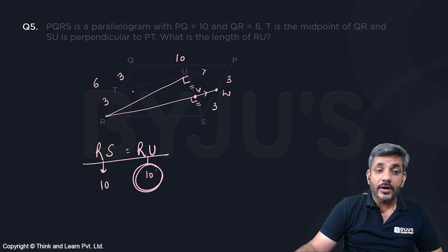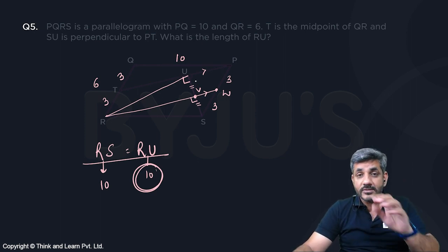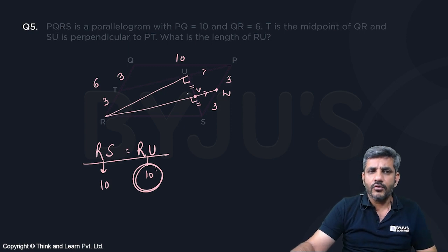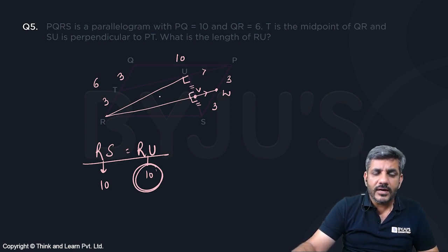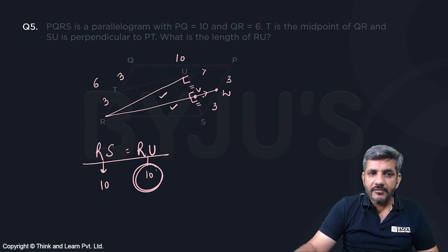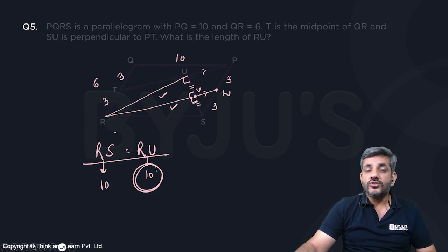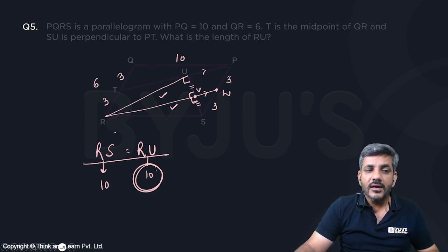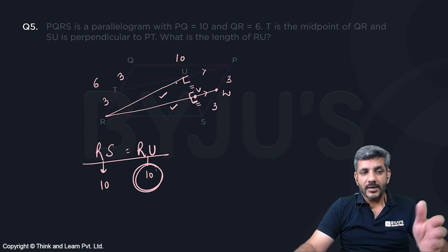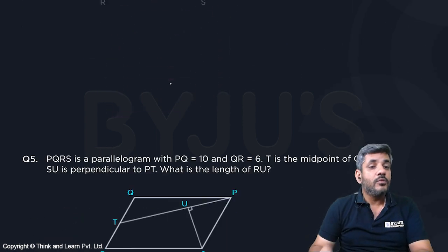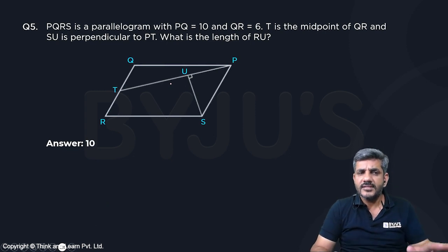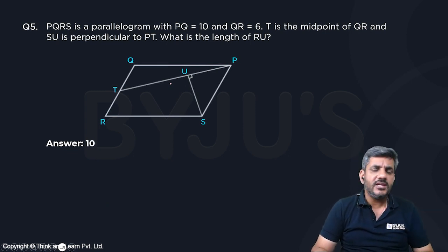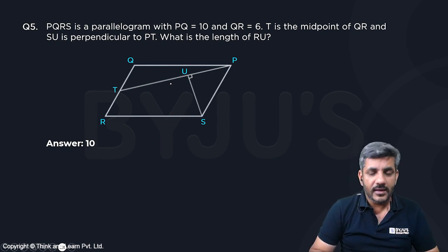Now you might ask how we know it must be an isosceles triangle. You can prove it easily: looking at the two triangles, UV is equal to VS, RV is a common side, and the angle between them is 90 degrees. By SAS congruence, the triangles are congruent, so RU is equal to RS, giving RU equal to 10. This was a tricky question — a person good in geometry would be able to solve it.